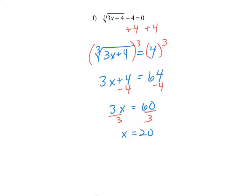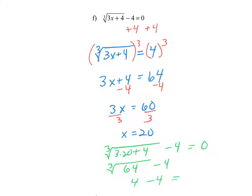As always, we want to check our solution by plugging the answer back into the original equation. We get the cube root of 3 times 20 plus 4, minus 4, and we want to make sure that equals 0. Under the radical we have 3 times 20, which is 60, and 60 plus 4 is 64. The cube root of 64 is 4, and 4 minus 4 is equal to 0. So x equals 20 is a solution to that radical equation.